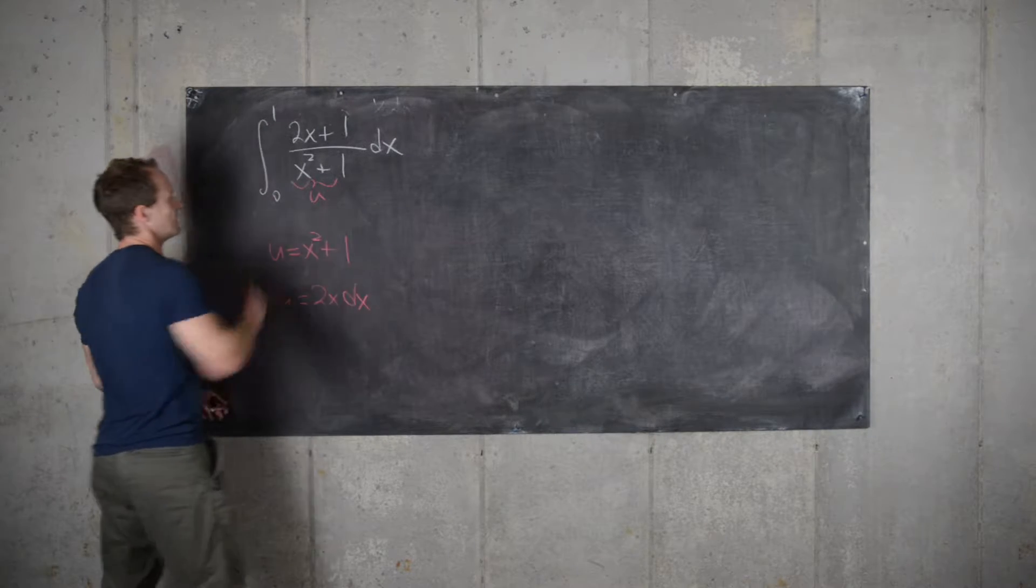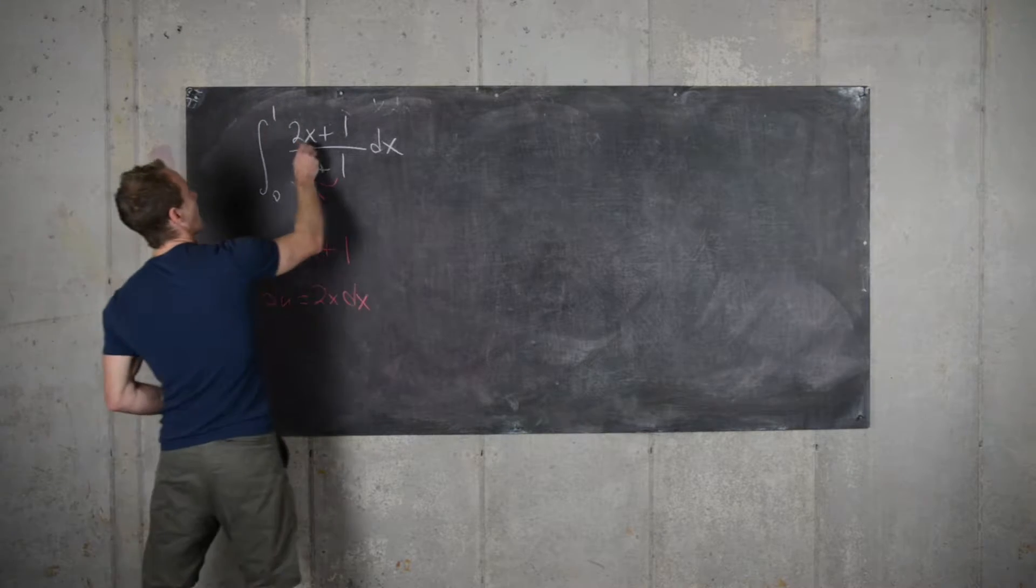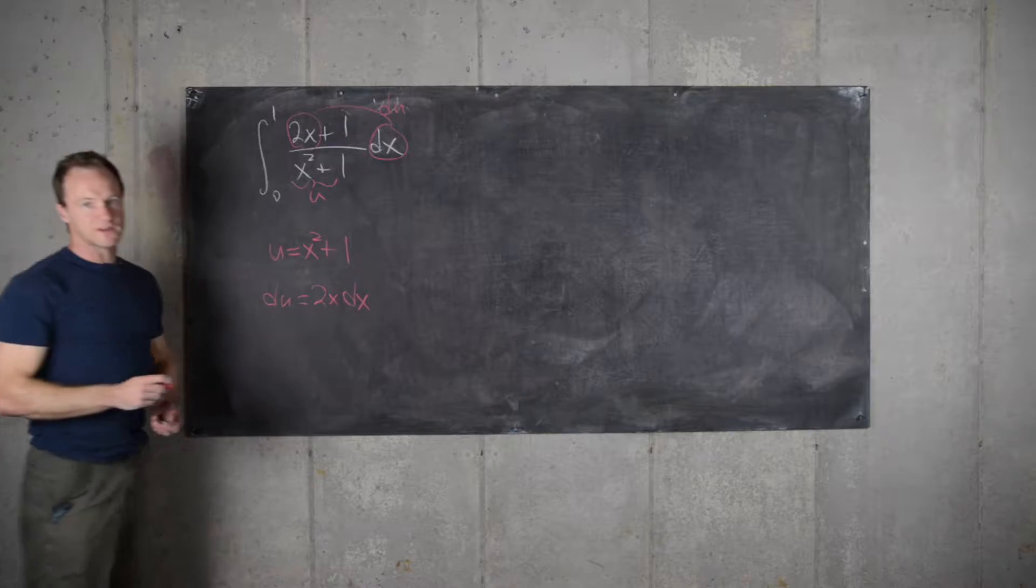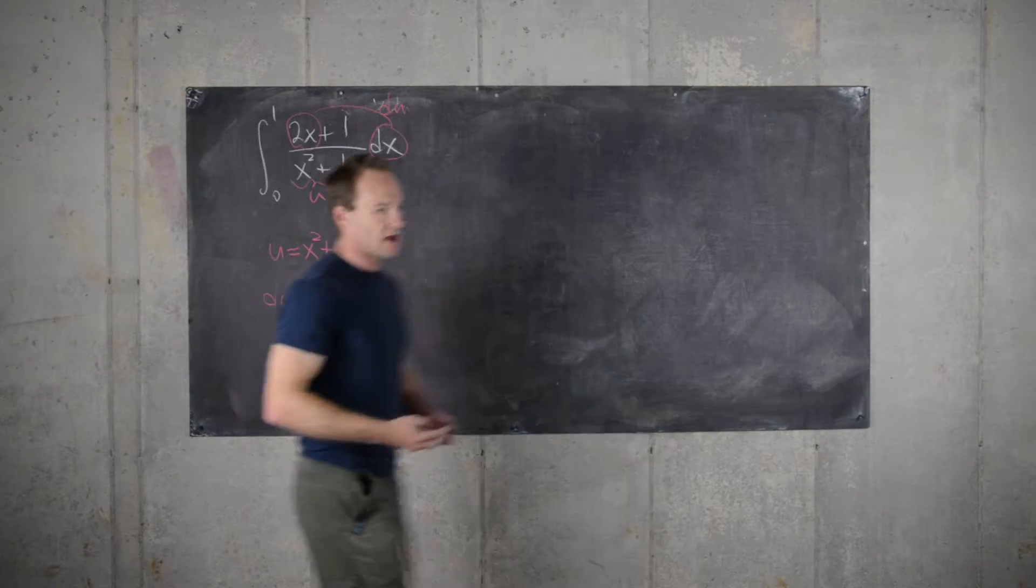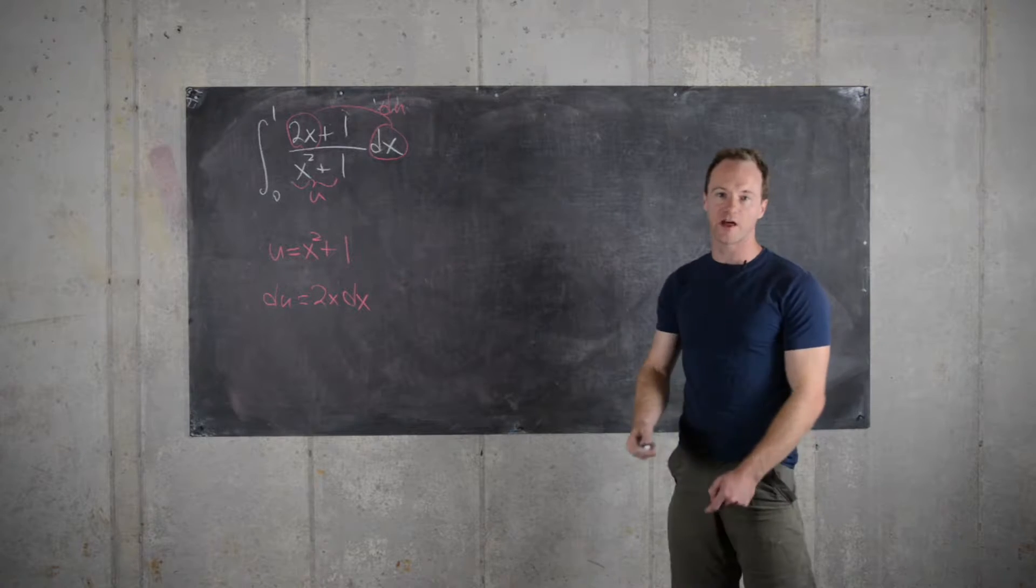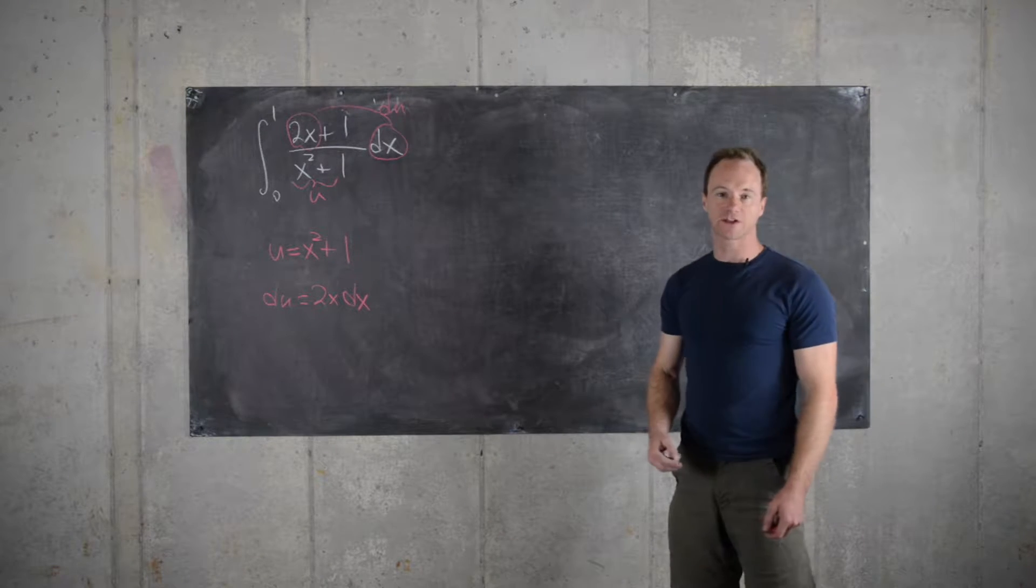So notice, there's our u, but now our du is only this portion. But that's not too bad because if we look carefully, what we're left with is 1 over x squared plus 1, which is hopefully an integral that you're familiar with.